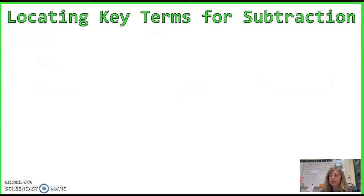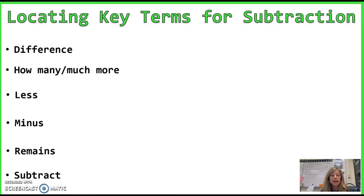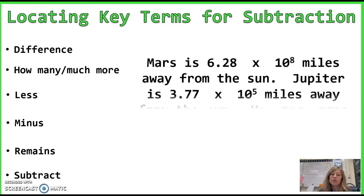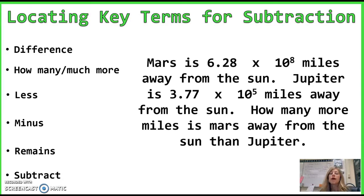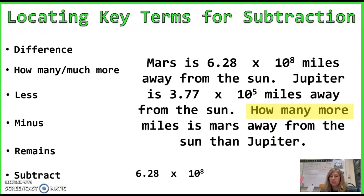Now we're working on some subtraction. Here are our key words: difference, how many, much more, less, minus, remains, and subtract. Here's our word problem: Mars is 6.28 times 10 to the 8th miles away from the sun. Jupiter is 3.77 times 10 to the 5th miles away from the sun. How many more miles is Mars away from the sun than Jupiter? Mars should be capitalized, just so you know. The key words are how many more — that means subtract. Hopefully you paused the video and tried; that should be your answer.